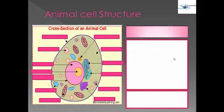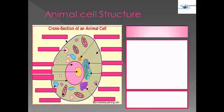As you can see in the picture, this is the structure of the animal cell. We are going to discuss each of the parts of the animal cell. The first one is the cell membrane.